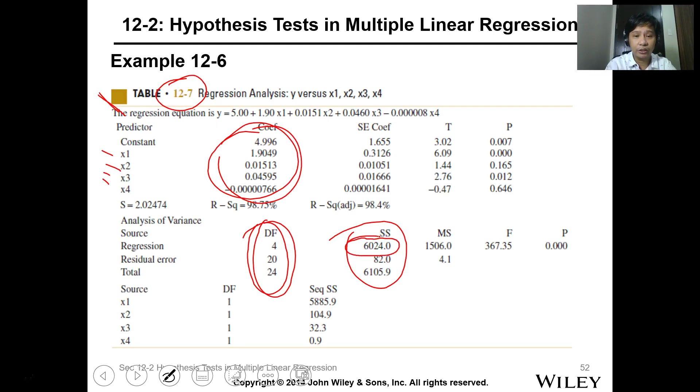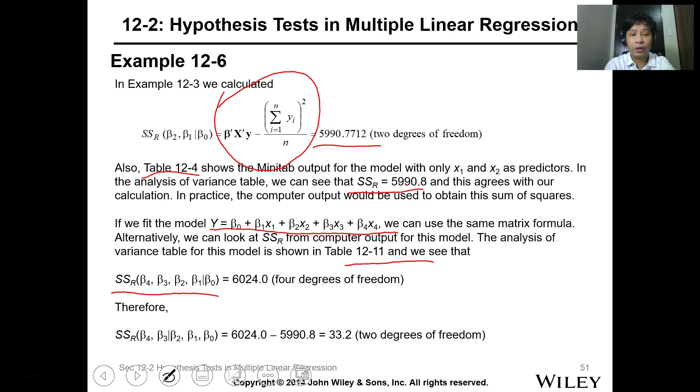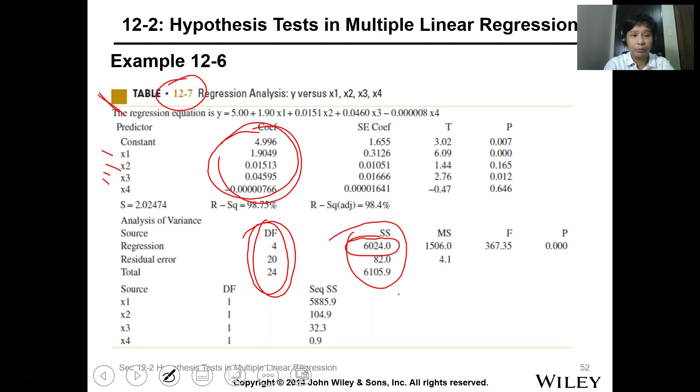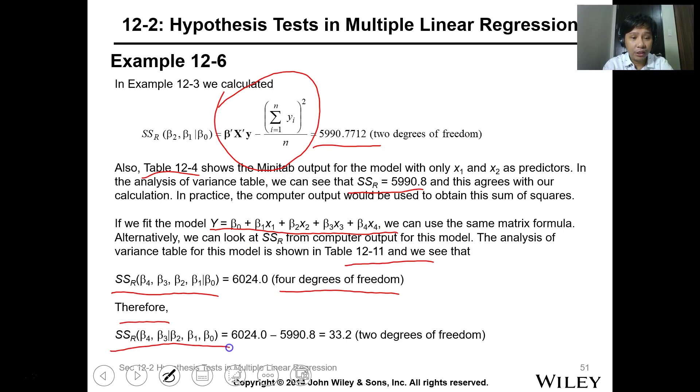The degrees are still - the degrees of freedom, different values. So SSR given β0 is this - the regression is 6024, 4 degrees of freedom. So we have four degrees of freedom.